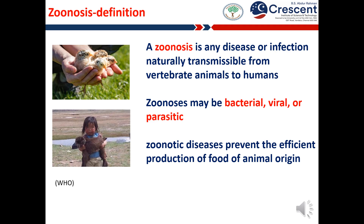First, we will see what is zoonosis. A zoonosis is any disease or infection naturally transmissible from vertebrate animals to humans. Animals play an essential role in maintaining zoonotic infections in nature. Being a public health problem, many of the major zoonotic diseases prevent the efficient production of food of animal origin and create obstacles to international trade in animal products.